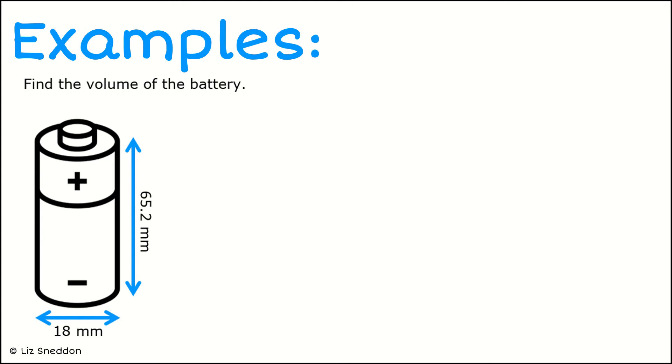Here's an example - we want to find the volume of this battery. We've got some measurements, and so the first thing I need to do is find the base area. Now the base area is a circle, so the formula I want to use is pi times the radius squared. When I look at my diagram, I've got this 18 millimeters, and that is going to be my diameter.